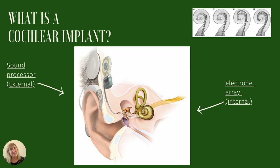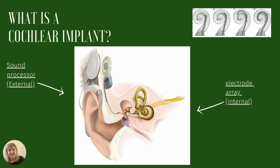A cochlear implant is a surgically implanted device that provides enhanced sound perception for those with a significant hearing loss who no longer find benefit from a hearing aid. The cochlear implant consists of two main parts: an external device called the processor, which includes a coil, a cable, a processor, and a power source. An internal device which is surgically implanted is called a receiver, which includes a stimulator and an electrode array fed through the hearing organ or cochlea.